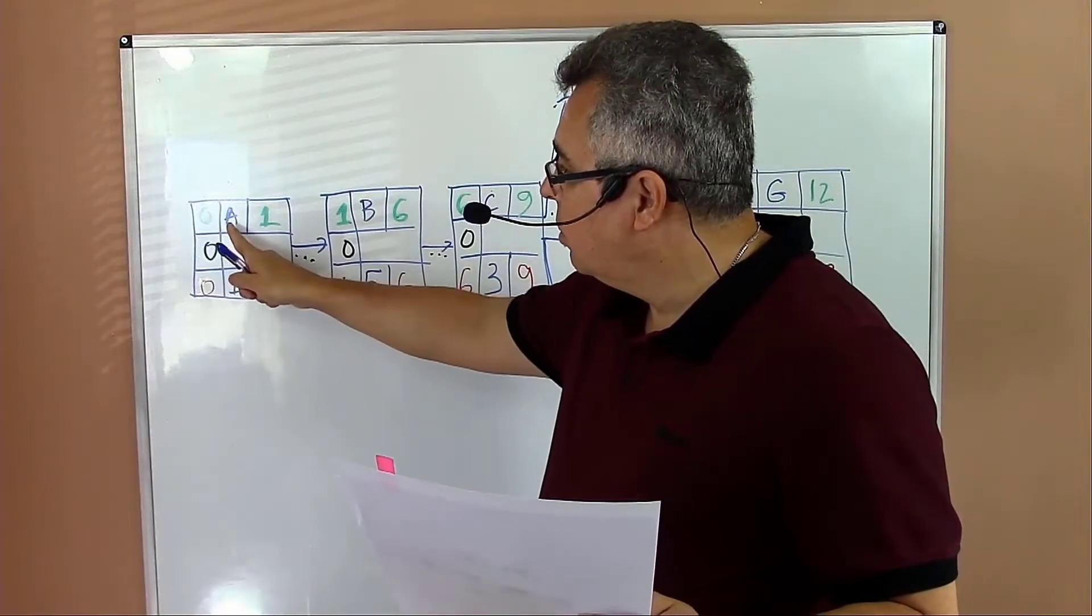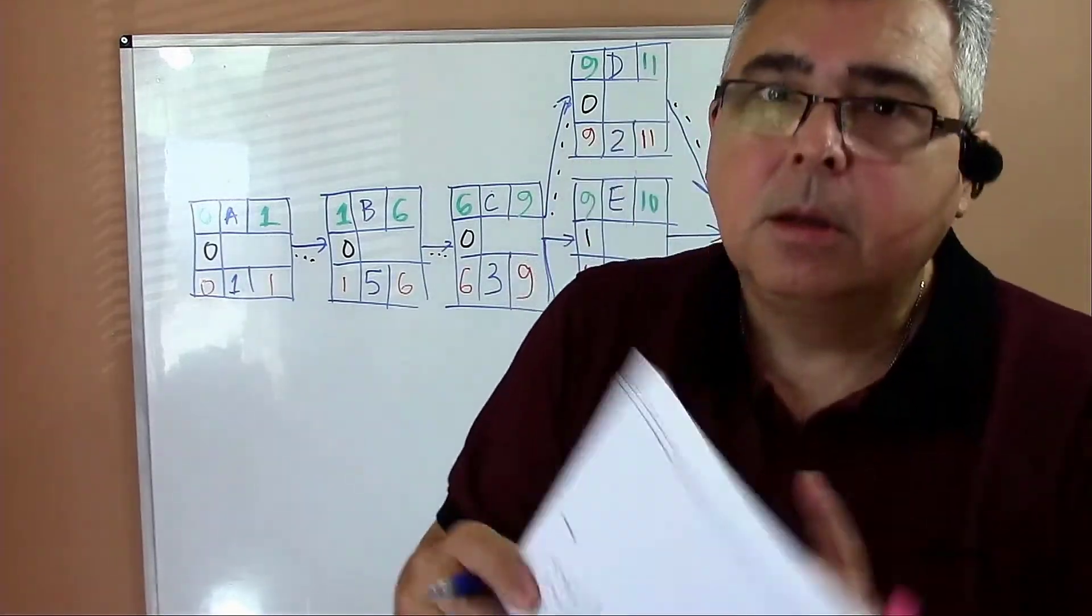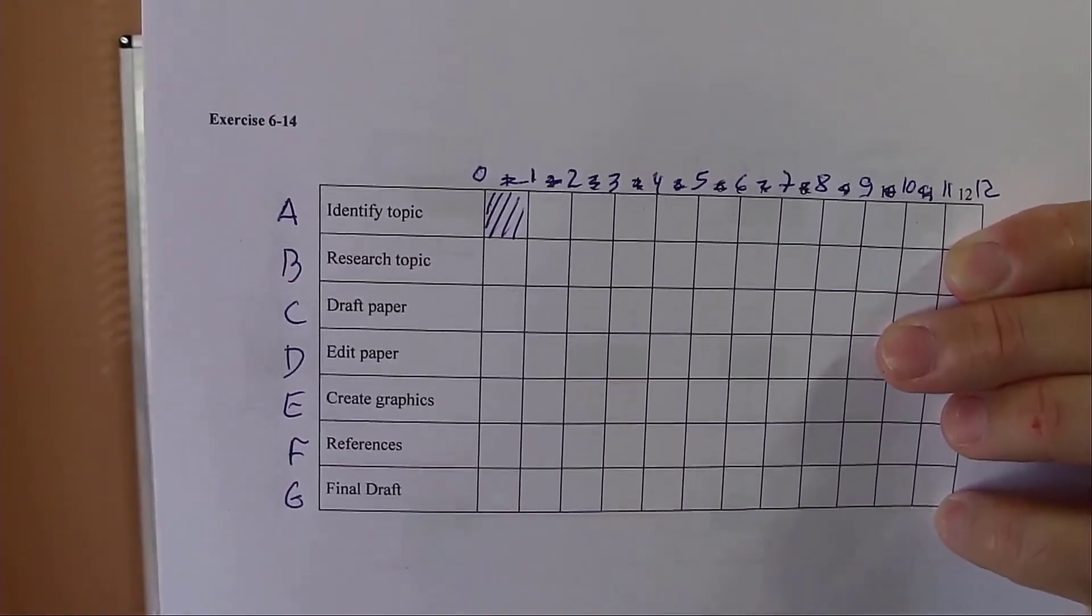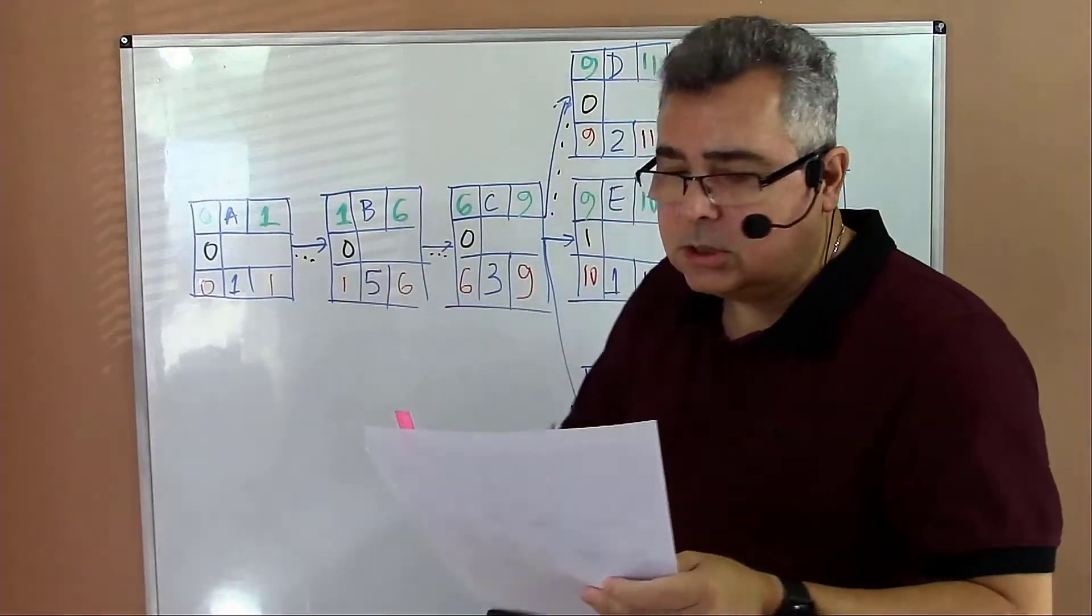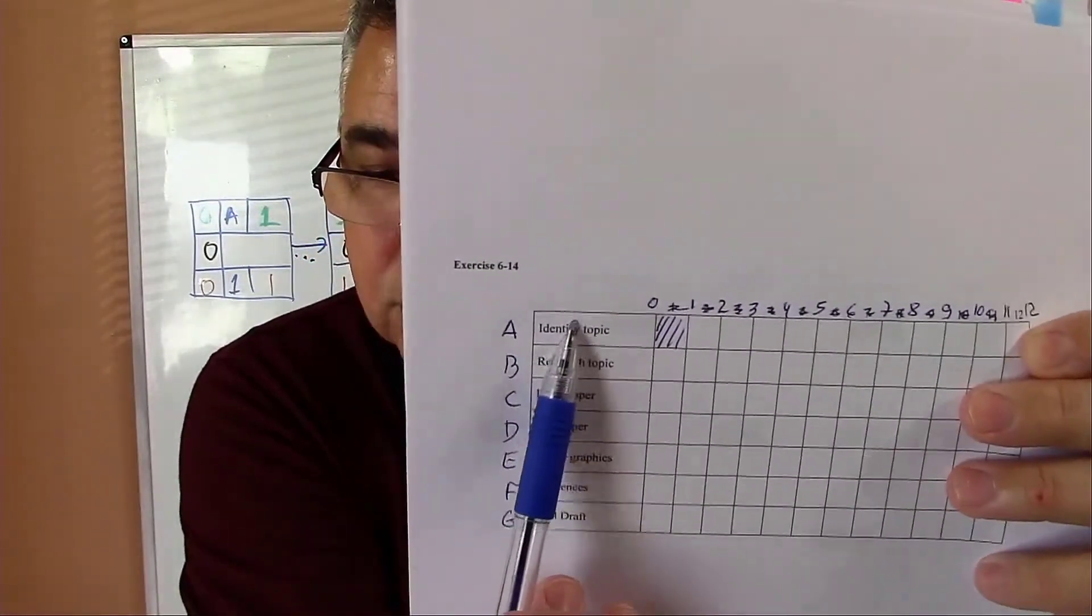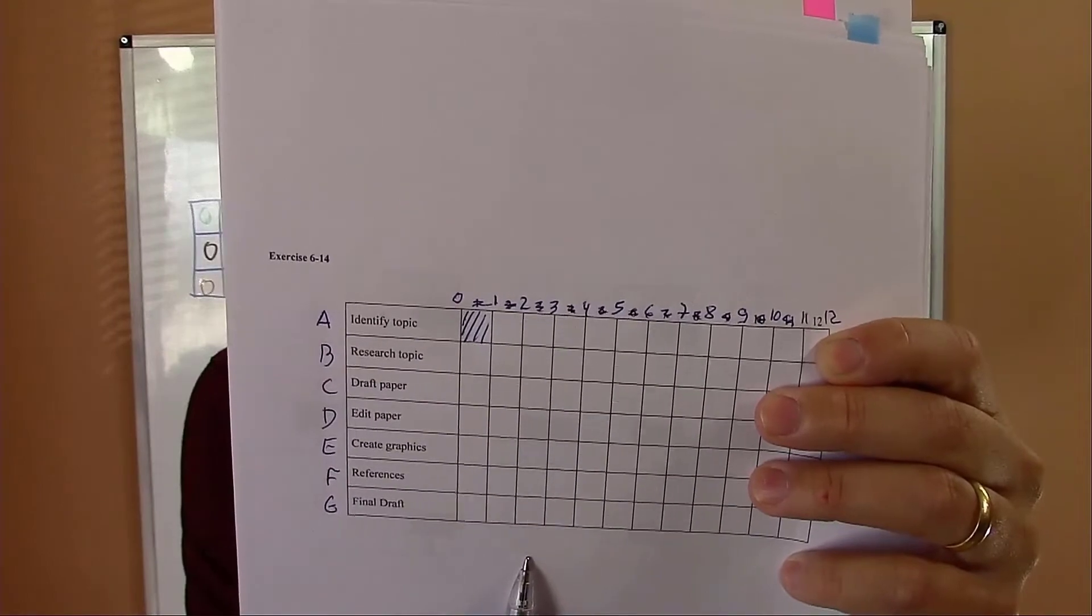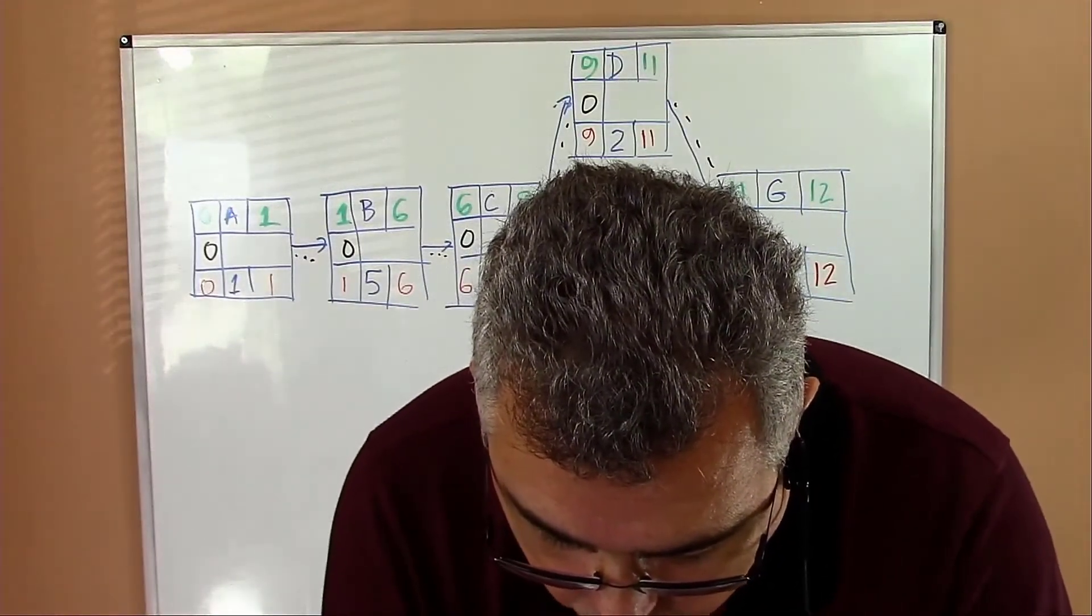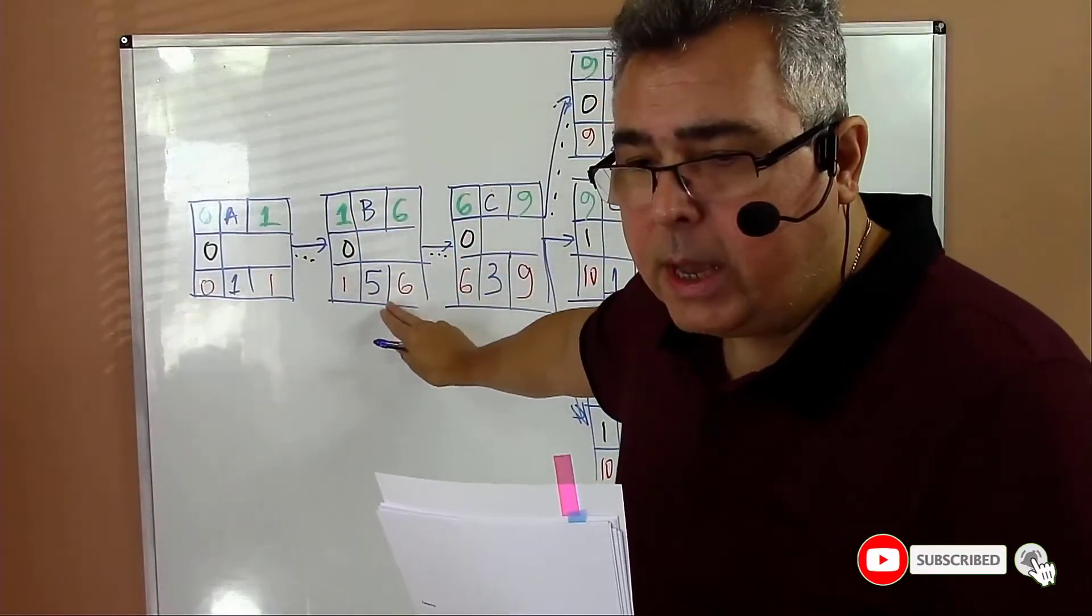Take activity A, goes from zero to one. I go here, activity A, identify topic, and put the number here, shadow it. Now let's go for the second activity. Activity B starts on one and finishes on six. Activity B starts on one, goes up to five. I'll be showing here from one to five. That's activity B.